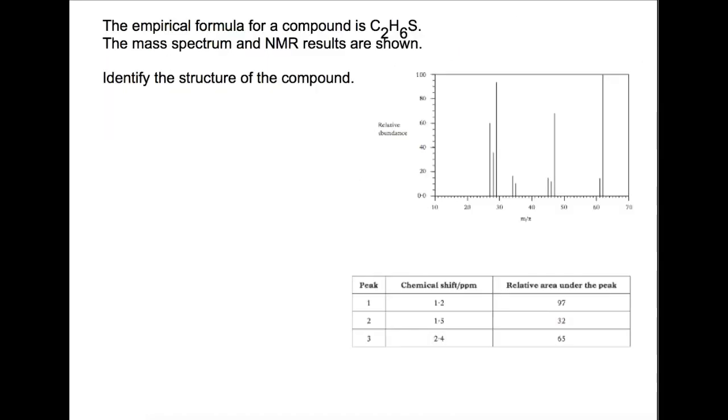For this example the empirical formula has already been calculated as C2H6S. You've been given the mass spectrum and the NMR of this compound and asked to find what the structure of the compound would be. If we have a look at the empirical formula first and if we calculate the GFM of the empirical formula then you'll find that that is 62. If we look at the molecular ion of our mass spec that we've got shown here it's the same as the gram formula mass. That means that our formula for this compound must be C2H6S.